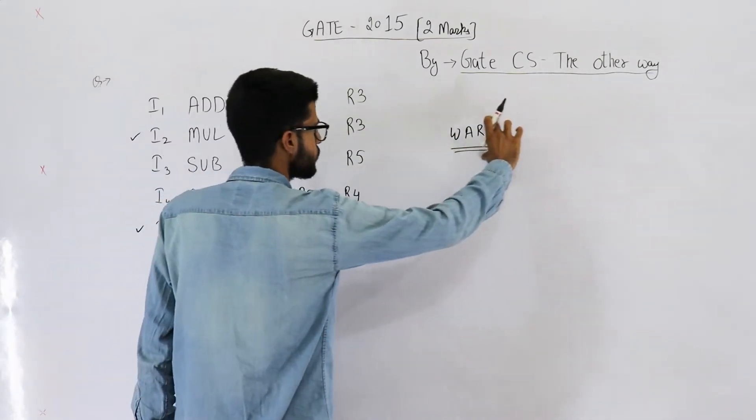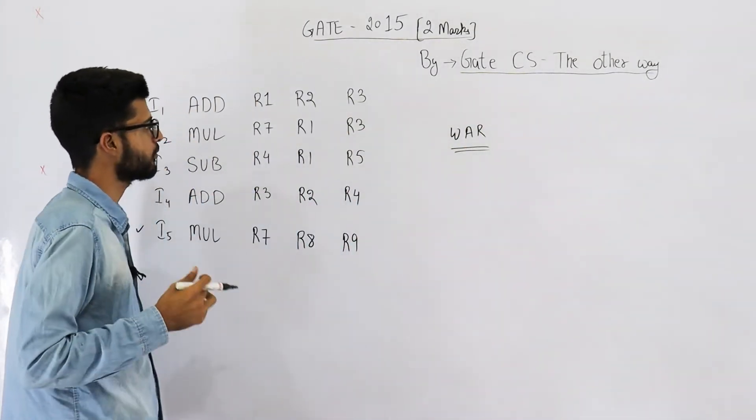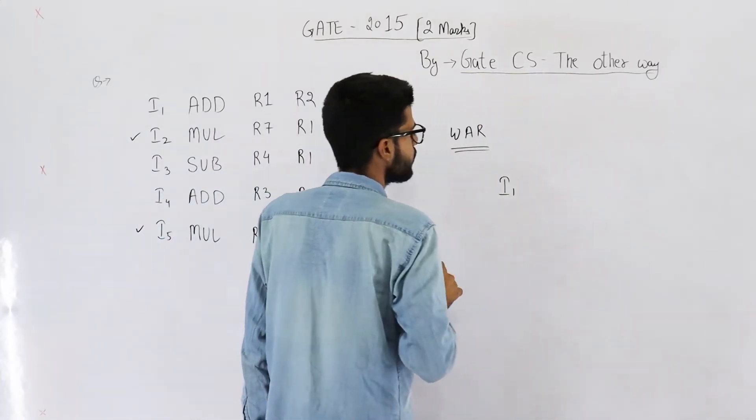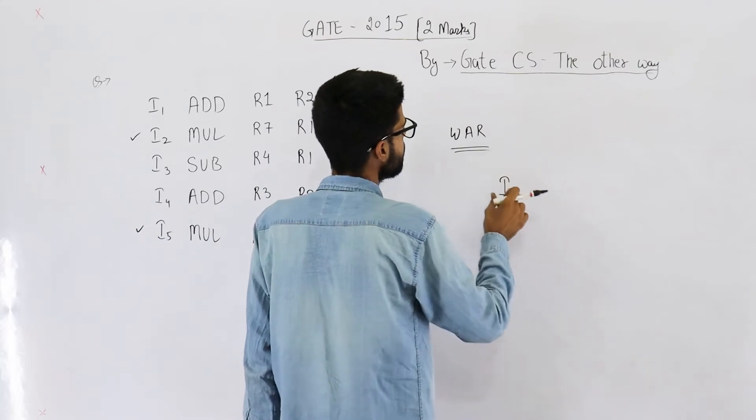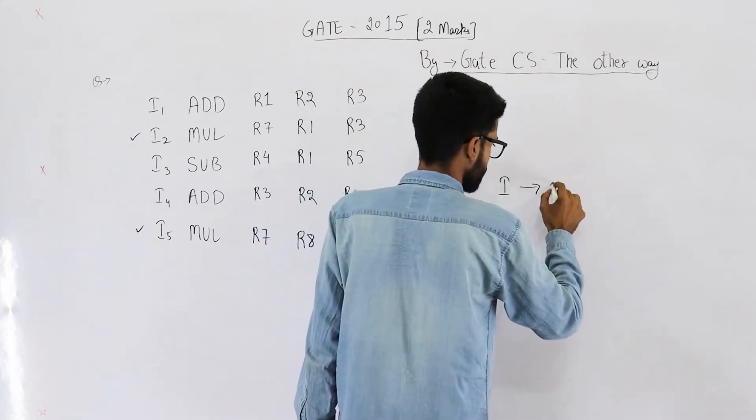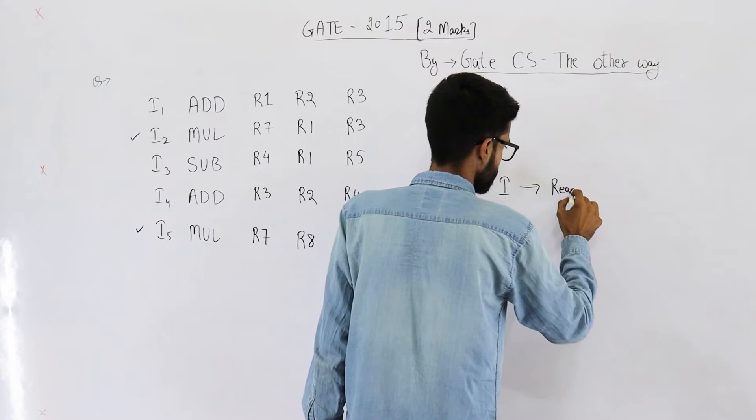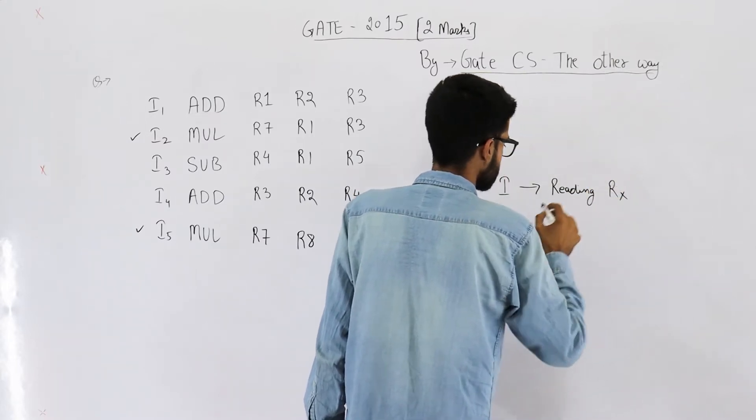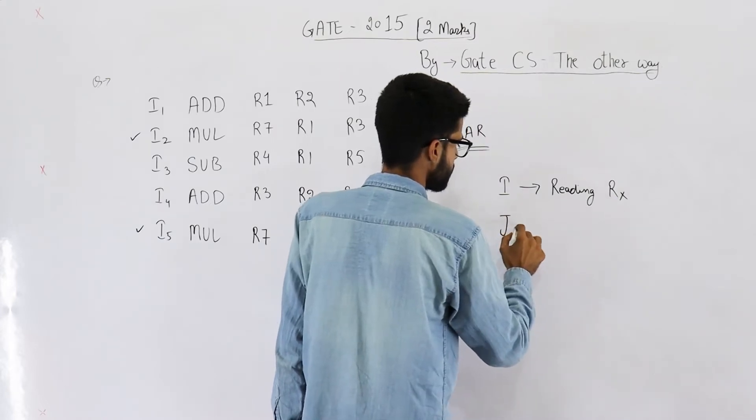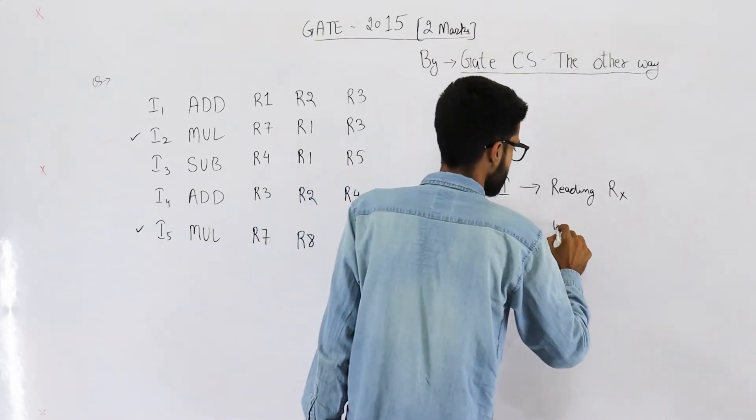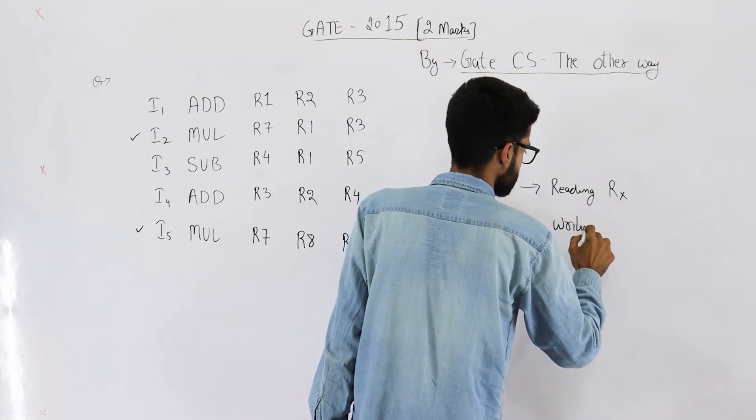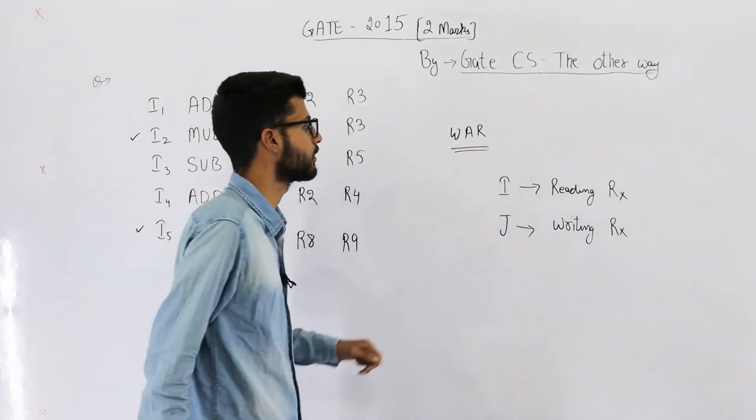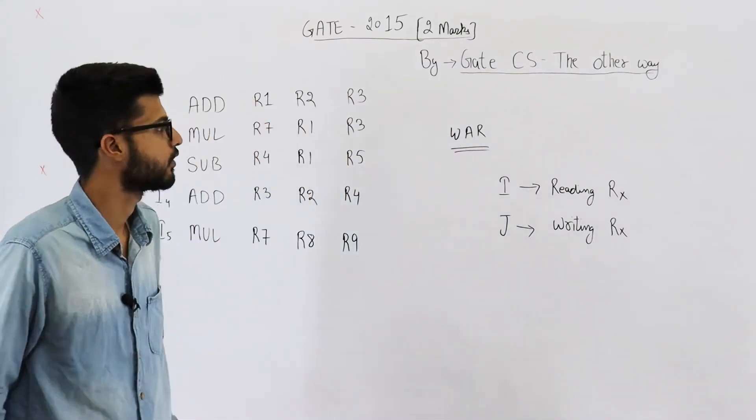We have already studied this topic in theory lectures, but still I am repeating. When instruction I is reading something, it is reading the register RX, and instruction J immediately next to it is writing something in the same register RX, you will say there is a WAR kind of dependency. Write after read.